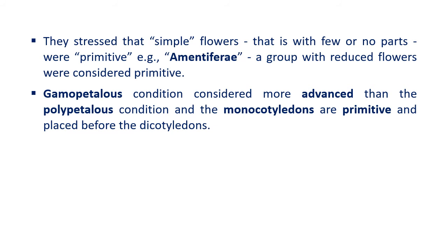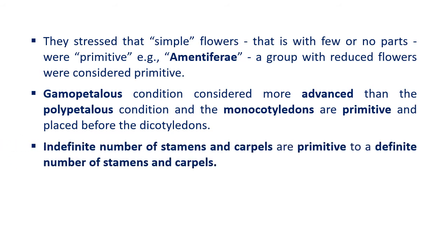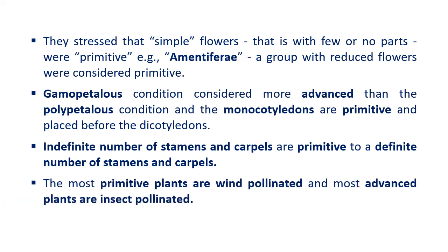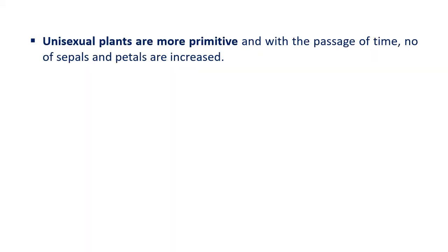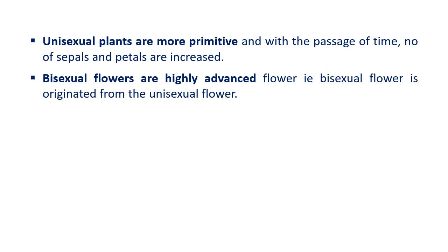Monocotyledons are considered primitive and placed before dicotyledons. An indefinite number of stamens and carpels is primitive compared to a definite number. The most primitive plants are wind-pollinated, while the most advanced plants are insect-pollinated. Unisexual plants are more primitive, and with the passage of time, the number of sepals and petals increased. Bisexual flowers are considered highly advanced compared to unisexual flowers.